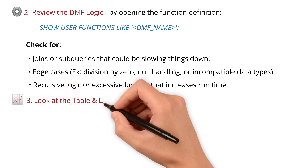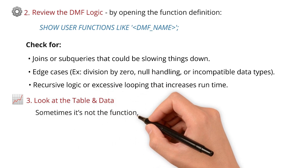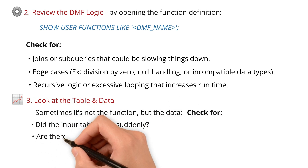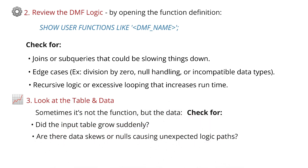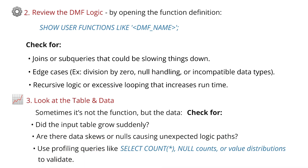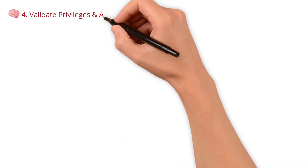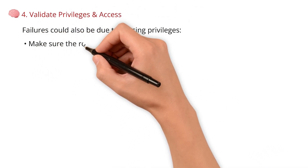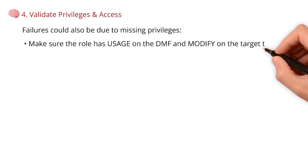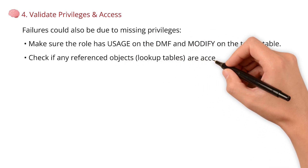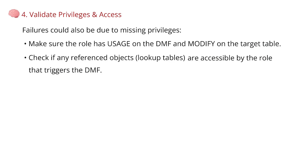I also look at the table and data — sometimes it's not the function but the data. I check if the input table grew suddenly, whether there are data skews or nulls causing unexpected logic paths, and use profiling queries like SELECT COUNT(*), null counts, or value distributions to validate. I also validate privileges and access — making sure the role has usage on the DMF and modify on the target table, and that any referenced objects like lookup tables are accessible by the role that triggers the DMF.